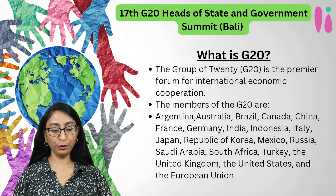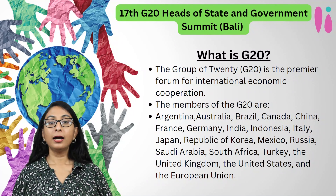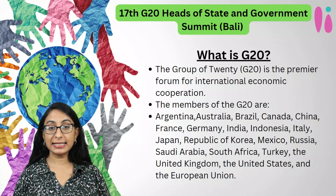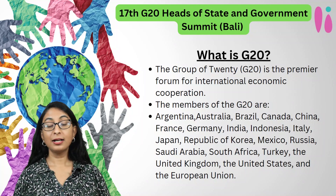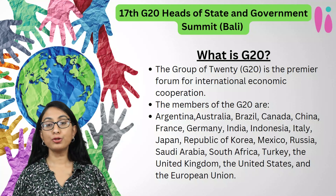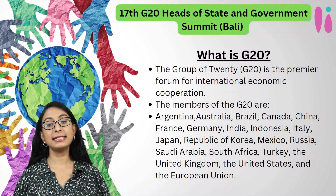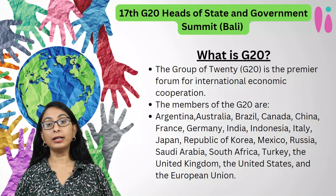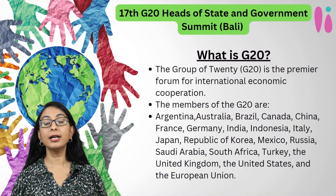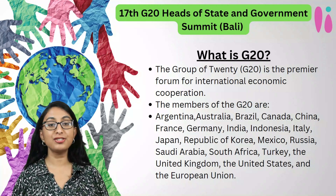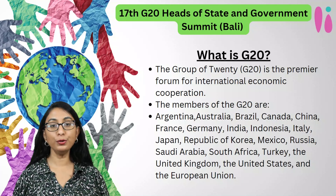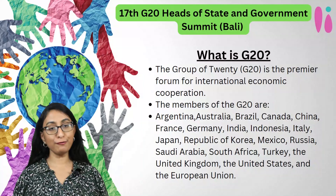What is G20? G20 means Group of 20. It includes 19 countries along with the European Union. There was a global financial crisis during 1997 to 1999. So in 1999, the Group of 20 was formed with the goal of looking for a solution to international financial stability.